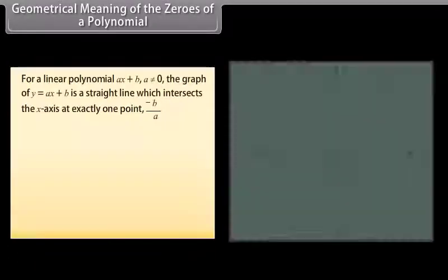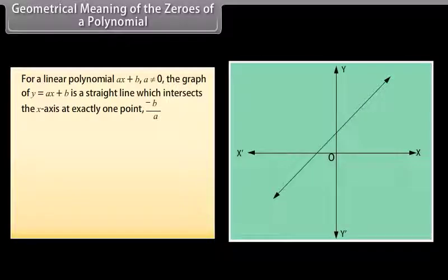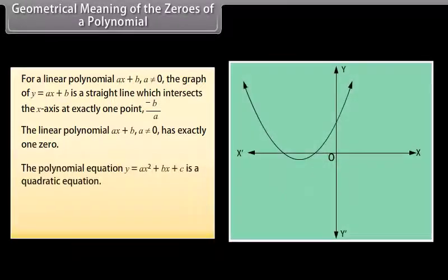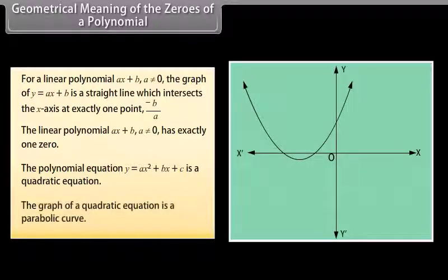Geometrical meaning of the zeros of a polynomial: For a linear polynomial ax plus b, where a is not equal to zero, the graph of y equals ax plus b is a straight line which intersects the x-axis at exactly one point, minus b upon a. Therefore, the linear polynomial ax plus b has exactly one zero. The polynomial equation y equals ax squared plus bx plus c is a quadratic equation, and the graph of a quadratic equation is a parabolic curve.